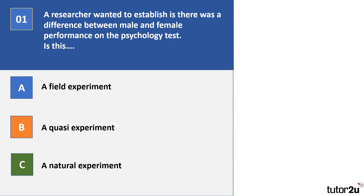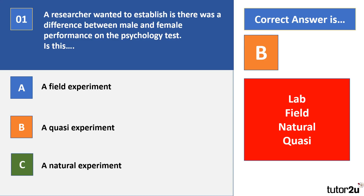Good luck. Question 1. A researcher wanted to establish if there was a difference between male and female performance on the psychology test. Is this A, a field experiment, B, a quasi experiment, or C, a natural experiment? Pause your video. Your correct answer there is B.